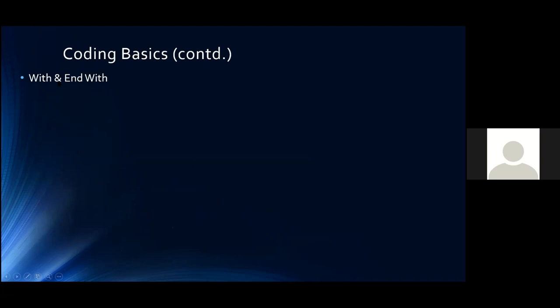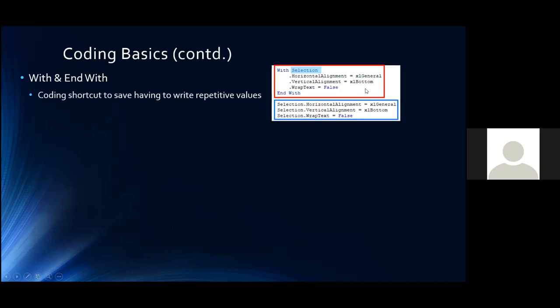Next is With and End With. When you record macros, this is used a lot and you need to understand what it means — it's a coding shortcut to save writing repetitive values. Between the With and End With statements, the word after With is implied before the dot on each line. So 'With Selection' means each dot-property line is equivalent to Selection.HorizontalAlignment, Selection.VerticalAlignment, etc. The two code blocks — one using With, one writing Selection explicitly — are absolutely identical, but With means you only have to write the object name once.